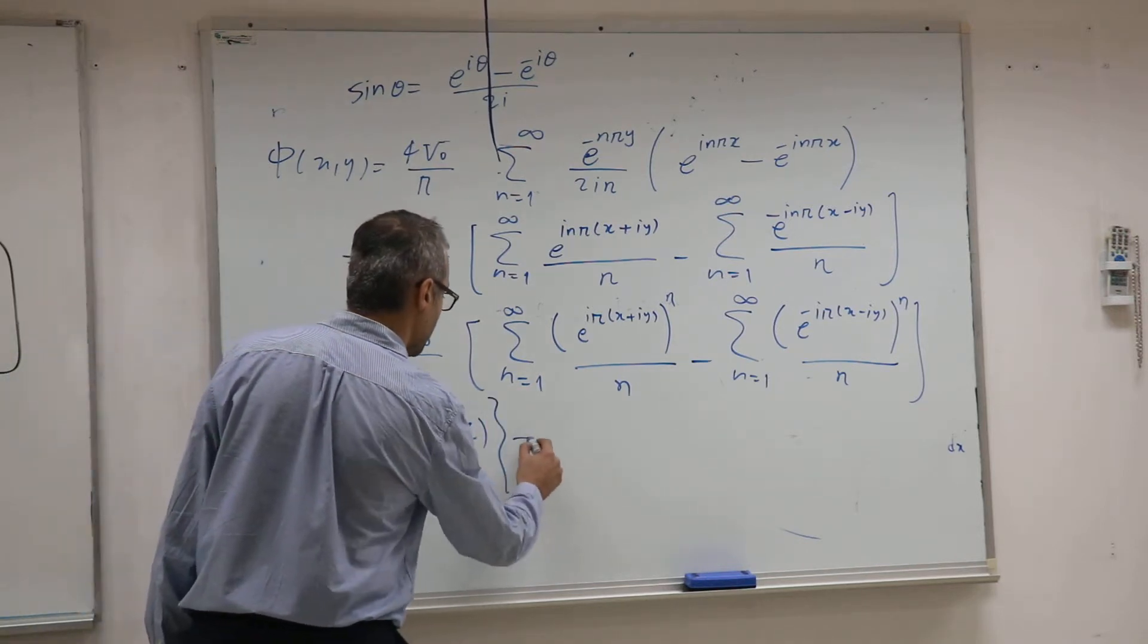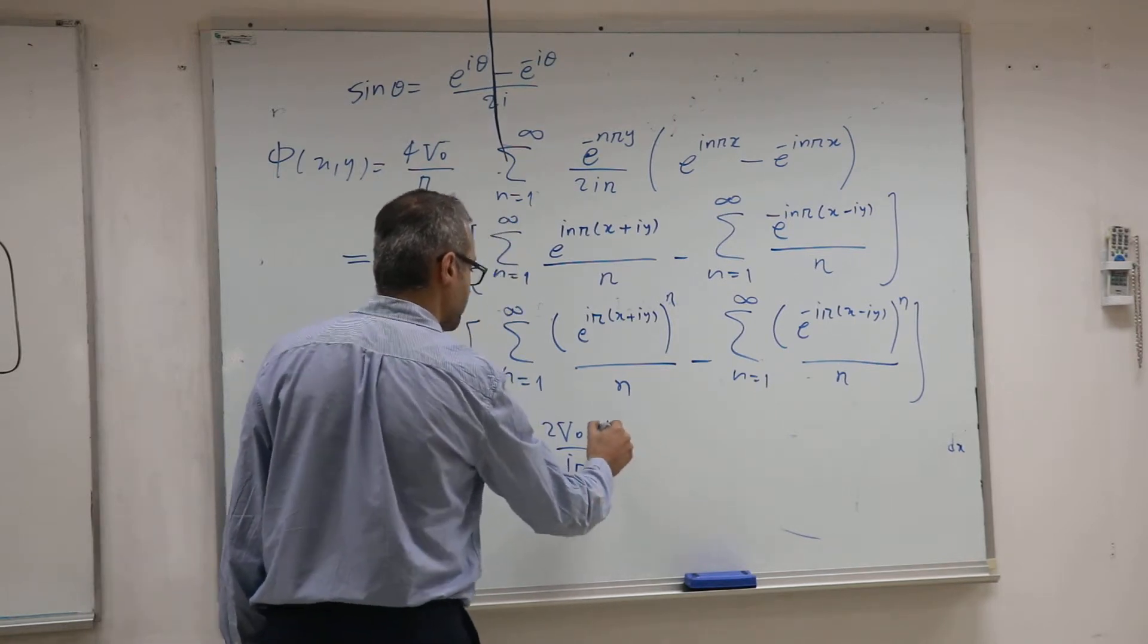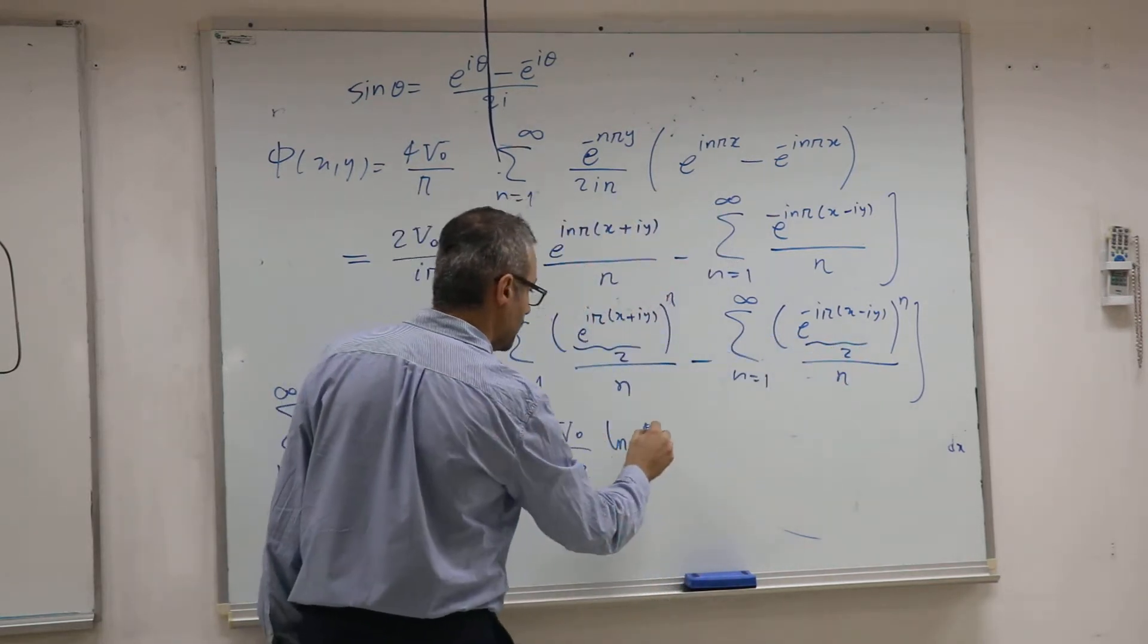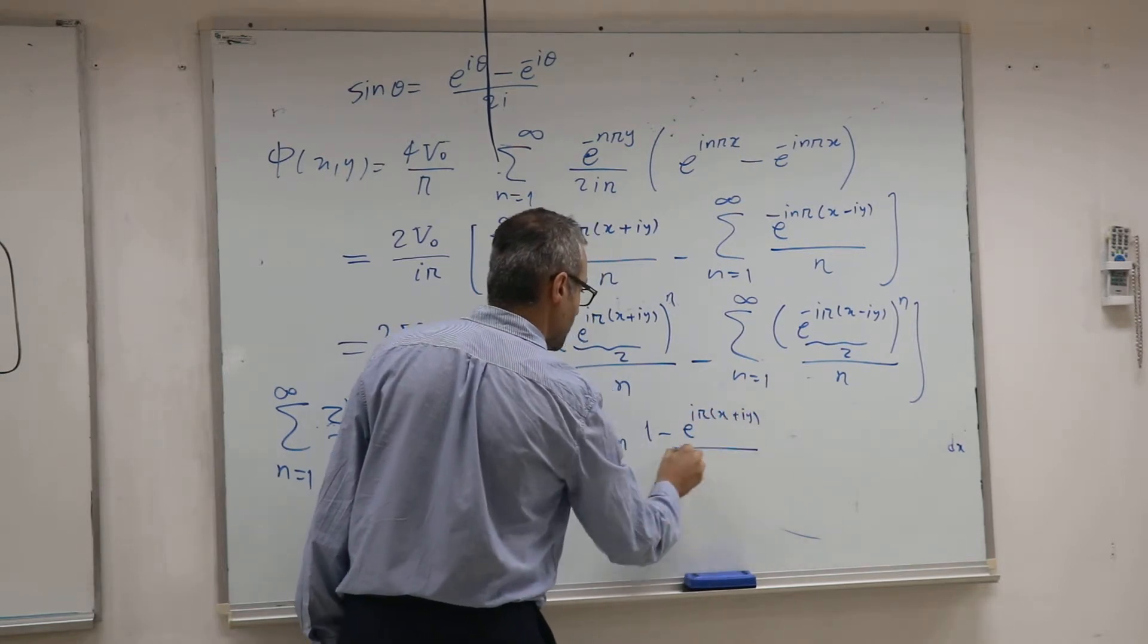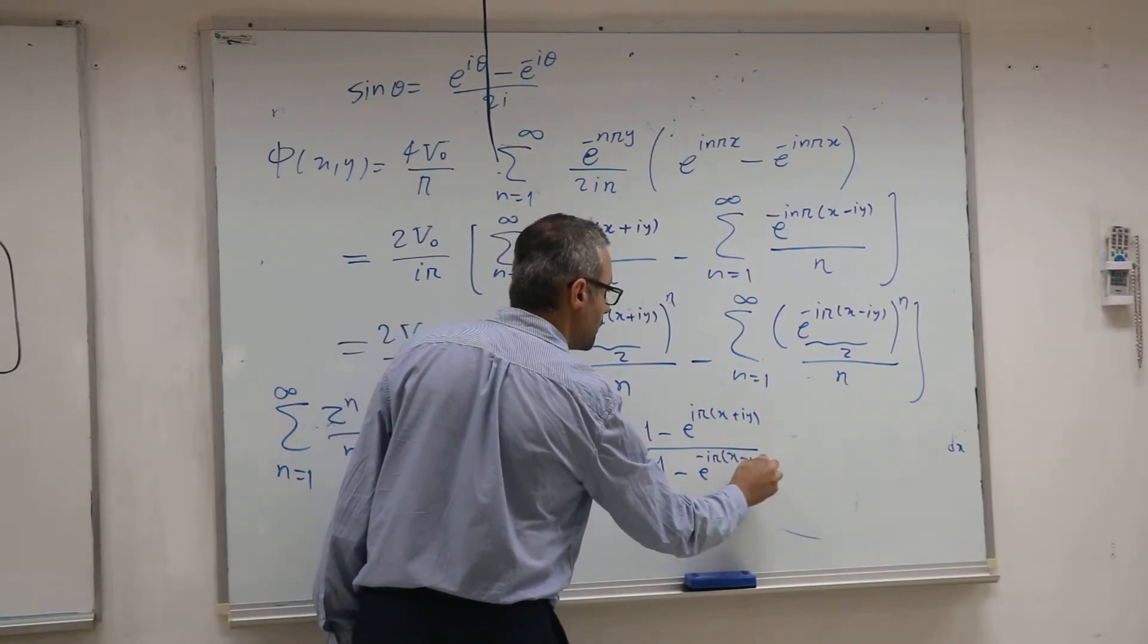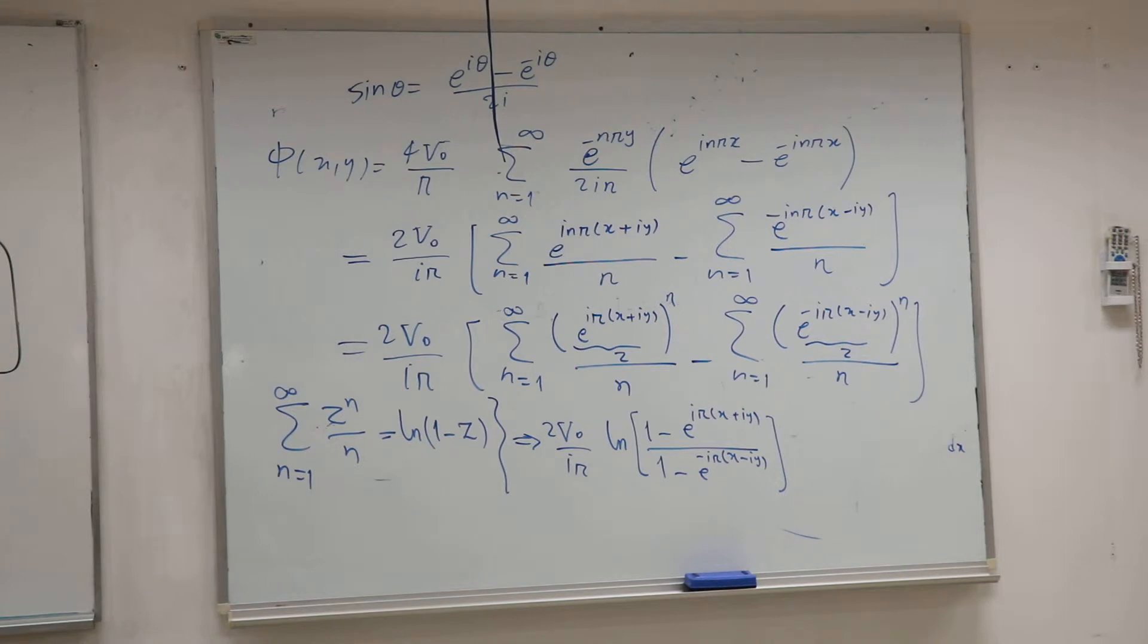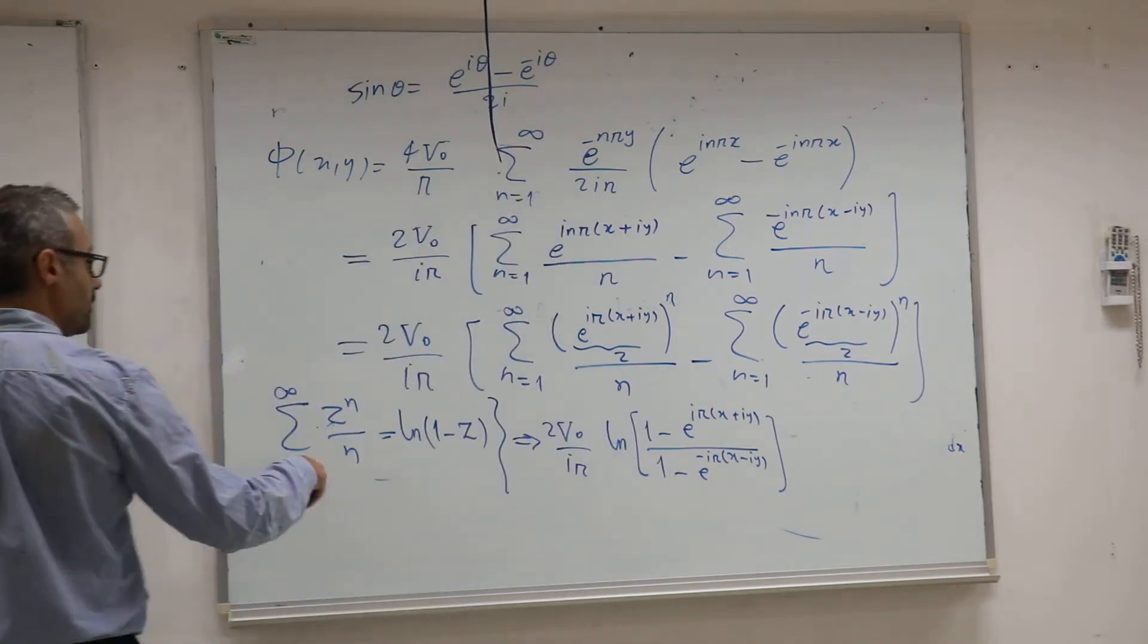So using this information, I can write ln(1 - E^(iP(X+iY))) over N(1 - E^(-iPX-iY)). And this is the potential. It's not finished. I can make more, but this is the potential.